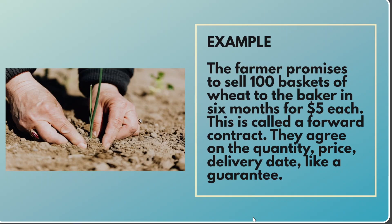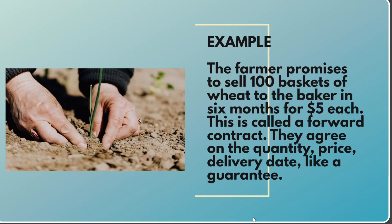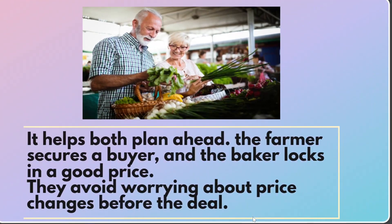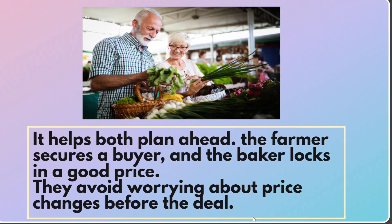They agree on the quantity, price, and delivery date — like a guarantee. It helps both plan ahead. The farmer secures a buyer, and the baker locks in a good price. They avoid worrying about price changes before the deal.